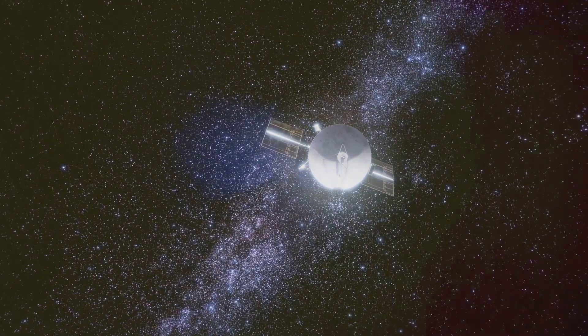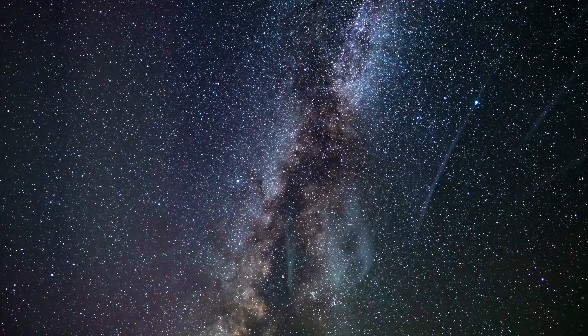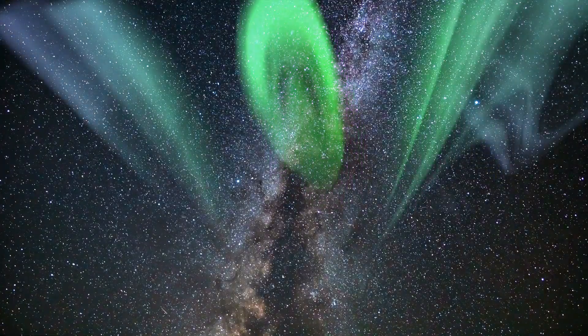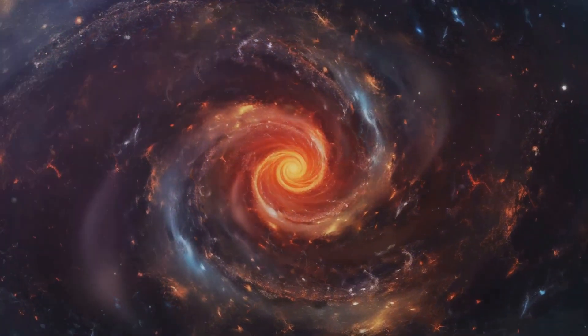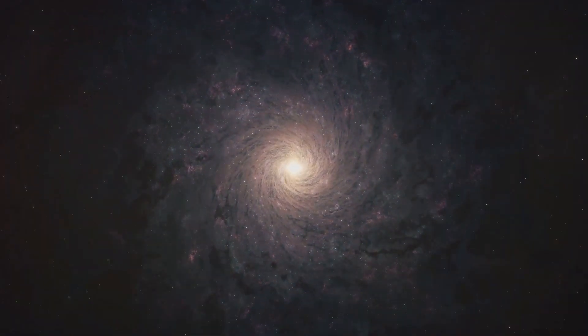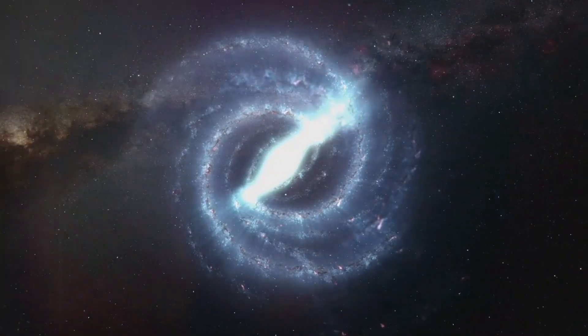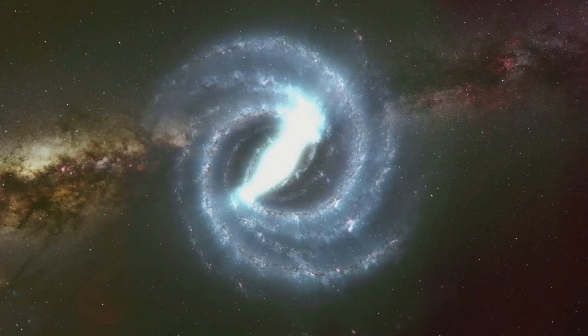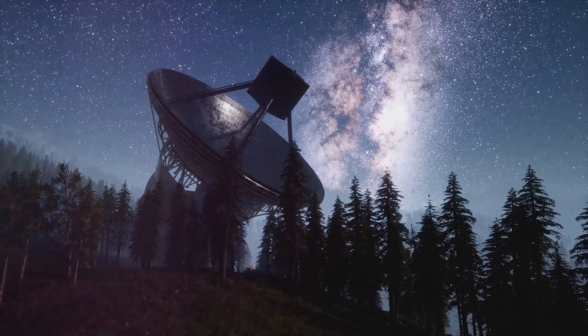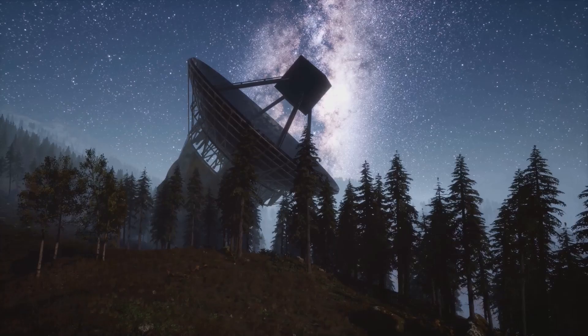As the Milky Way and Andromeda continue their inexorable approach, their gravitational fields will begin to interact more strongly. The vast distances between stars within each galaxy mean that stellar collisions will be extremely rare, but the galaxies themselves will begin to distort and stretch under the influence of each other's gravity. This initial stage of the collision will be a slow and gradual process, unfolding over millions of years. The Milky Way's familiar spiral structure with its graceful arms and central bulge will become increasingly distorted. Similarly, Andromeda's elegant spiral form will begin to warp and twist. These early signs of the impending collision will be subtle at first, visible only to the keen eyes of astronomers equipped with powerful telescopes.